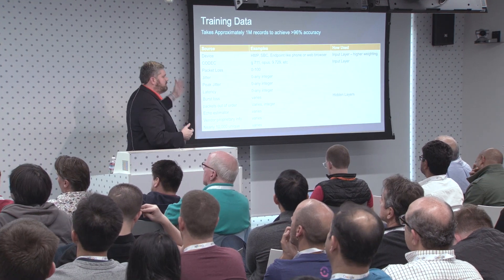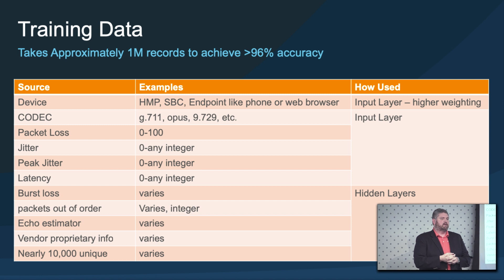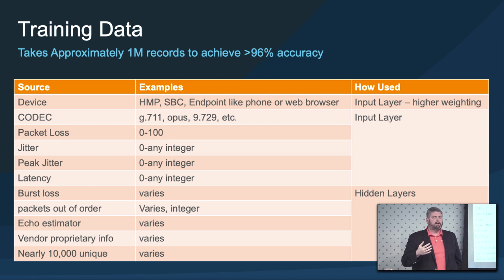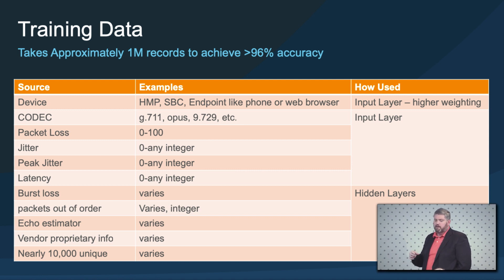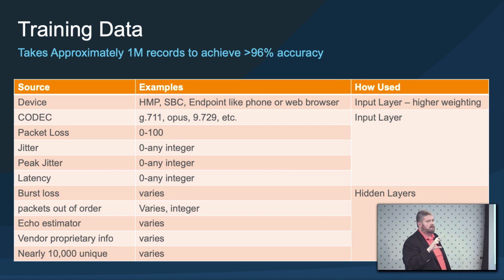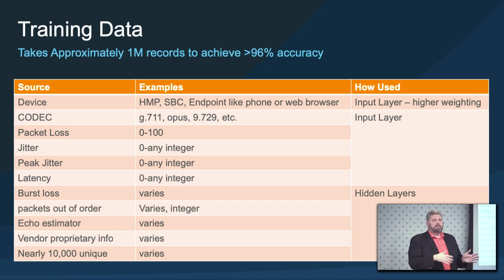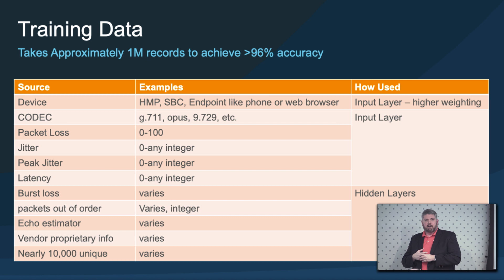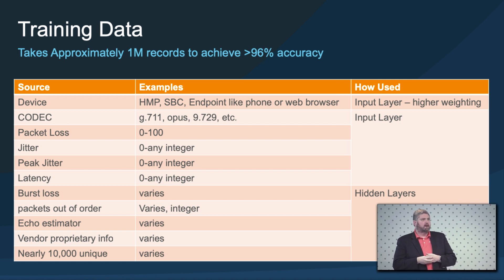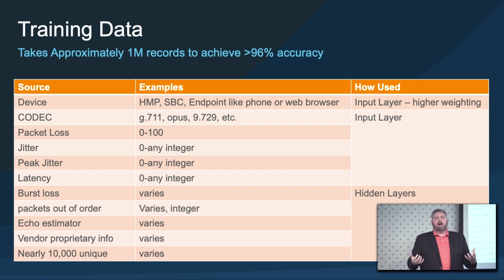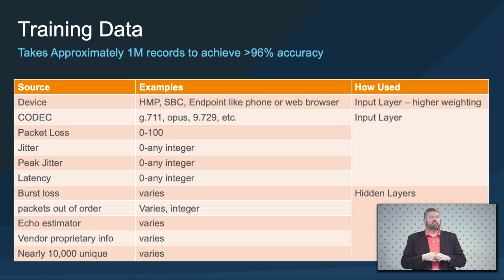Let's look at the data involved. There's a lot of information in QoS coming out of devices. Our most verbose clients have somewhere around 400-500 lines of total information. Our least verbose clients — like those border controllers I mentioned — have about eight lines of data total, with gaps in what's filled in. Some devices have the e-model with the MOS score; some are just giving network statistics. So our input layer was fairly standard — we weighted the HMP device most heavily because we believe it's the most accurate model.